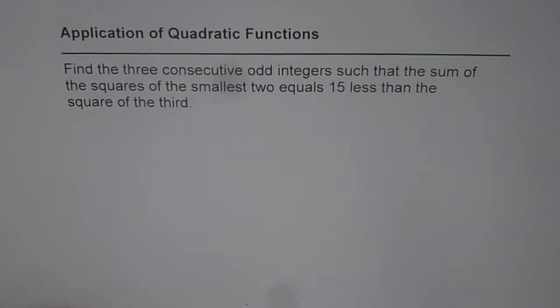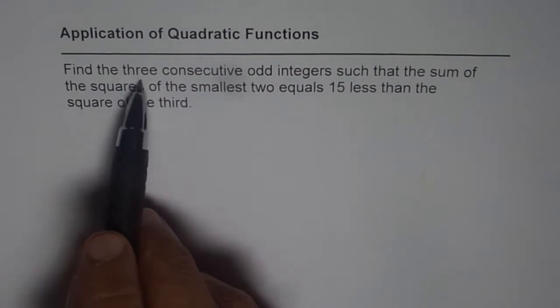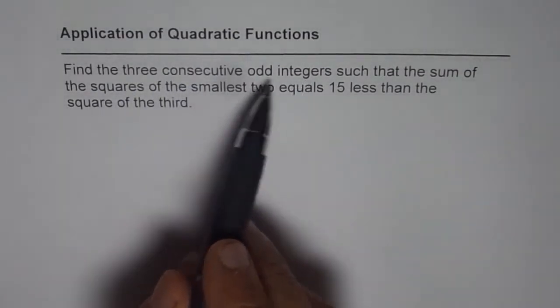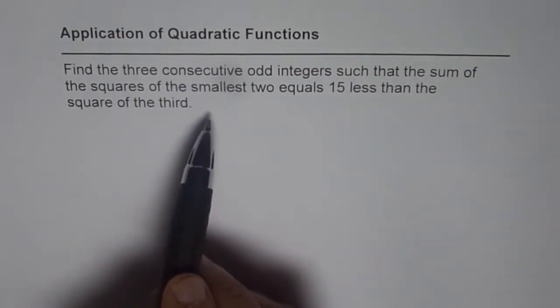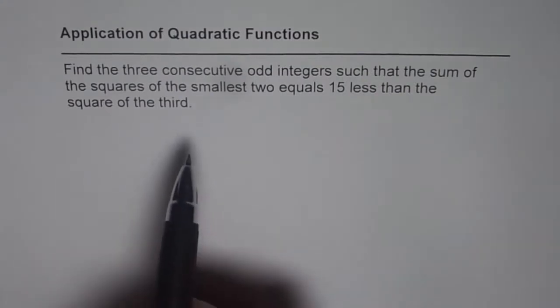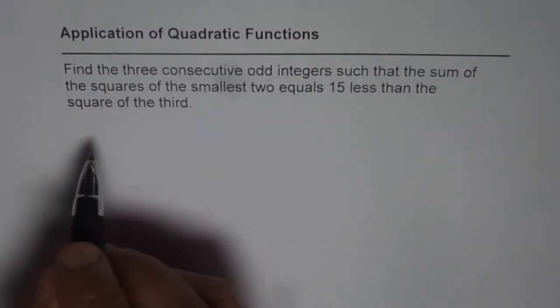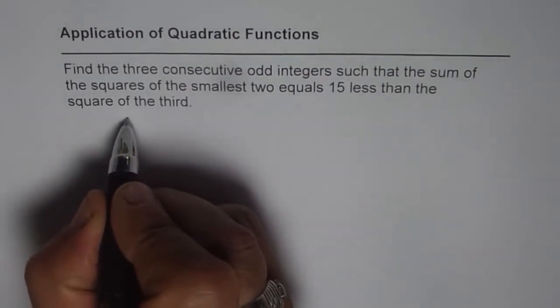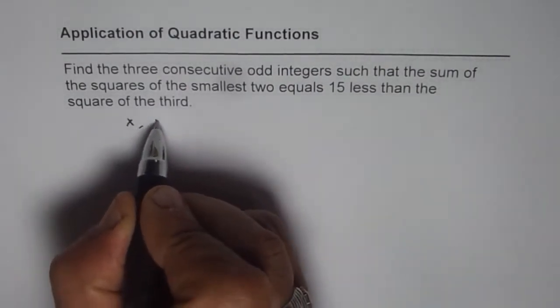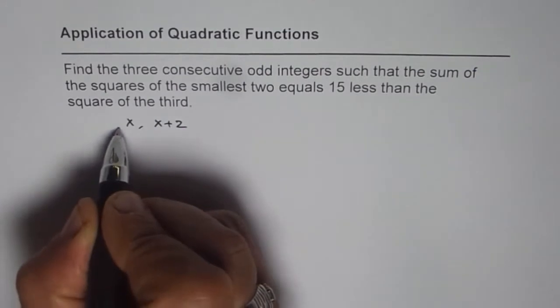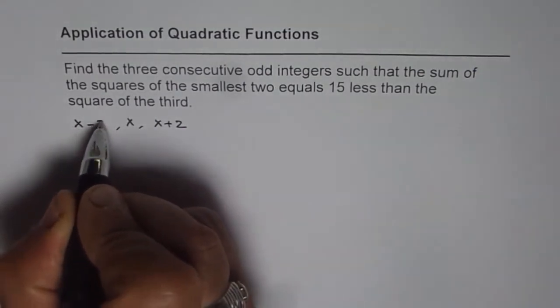I am Anil Kumar and now let us see how to solve such questions. When we say three consecutive odd integers, the integers will be x, x+2, and x+4. That is one way of doing it. The other way is we can consider integers as x-2, x, and x+2.